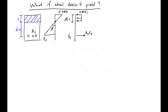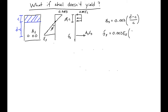We can figure out the stress and strain in our steel. Like before, our steel strain — using similar triangles — will be 0.003 times (D minus C) over C. Then our steel stress is just this strain times the modulus of elasticity of the steel.